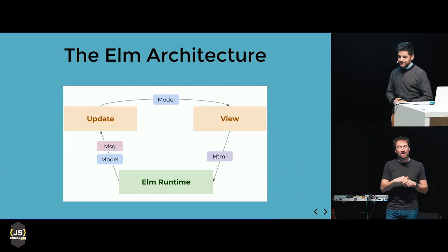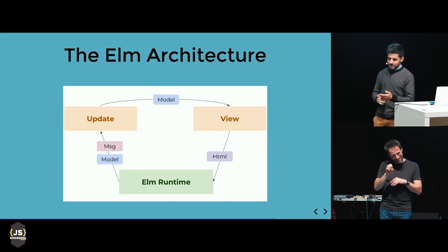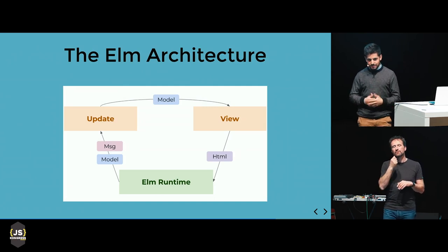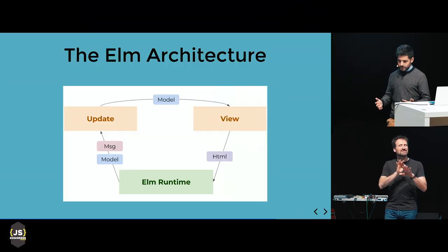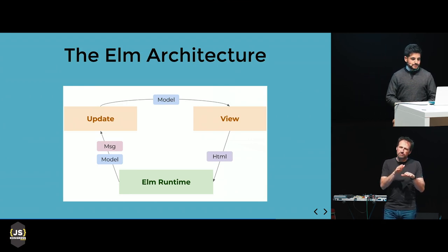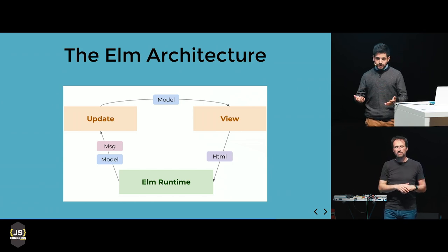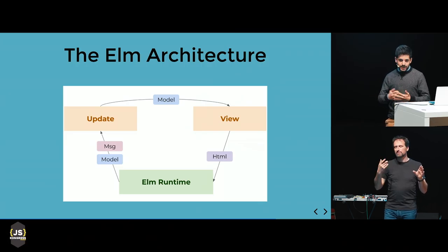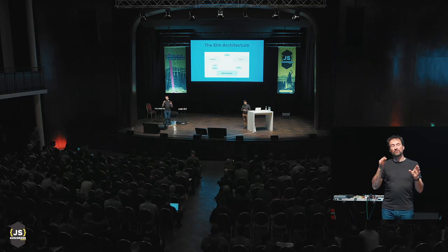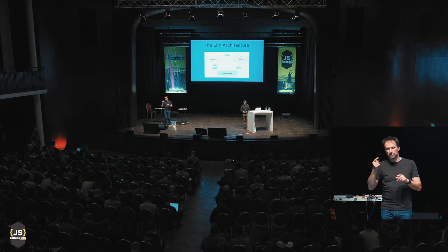Before diving into the code, I should mention that Elm has a standardized way of building applications called the Elm Architecture. If you use Redux or something like that, this is completely similar — some of those libraries are in part based on this. We have a view function that takes the current state of the world, called the model, and returns HTML. We have messages, which are like Redux actions. And we have an update function that takes the triggered message and the current state and returns the new state.